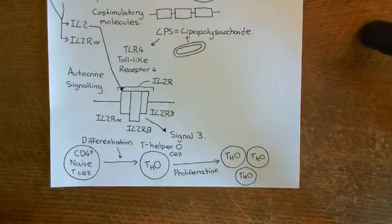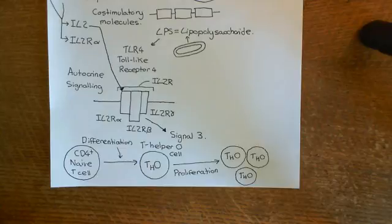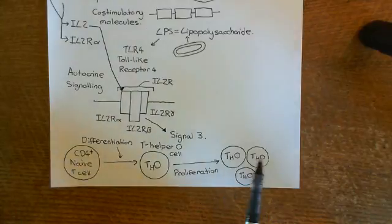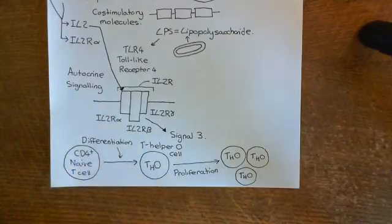We've discussed that what's going to happen is that dendritic cells, which are infiltrating into the synovial joint, are going to present autoantigens to CD4-positive naive T-cells, activate those CD4-positive naive T-cells, and these are going to firstly differentiate into T-Helper nought cells and then proliferate, giving you a whole population of T-Helper nought cells.